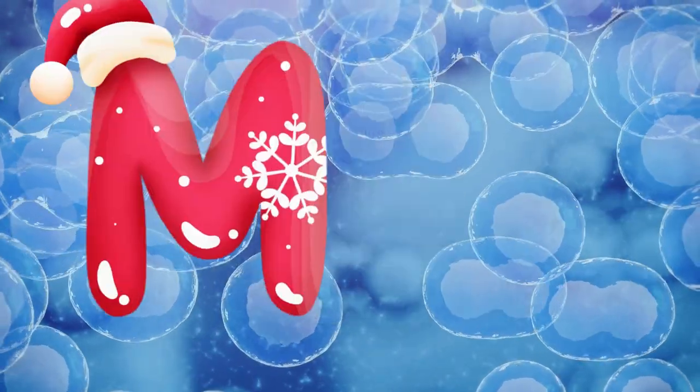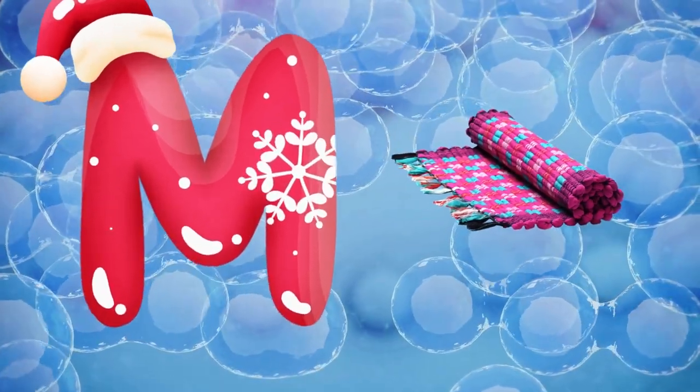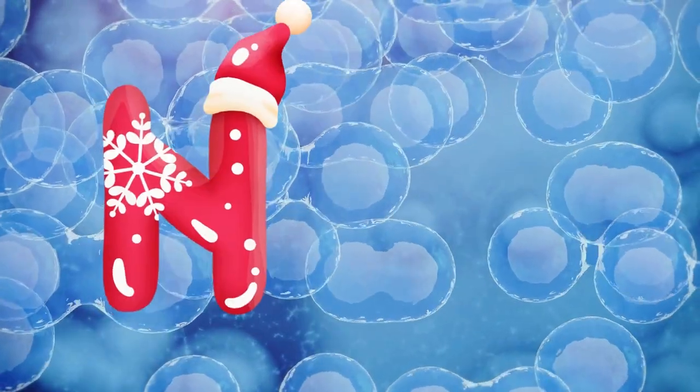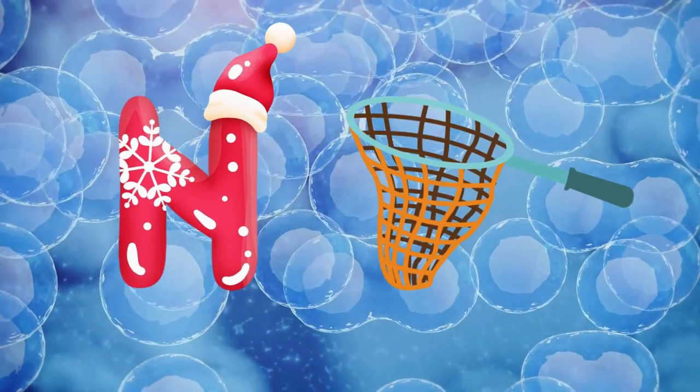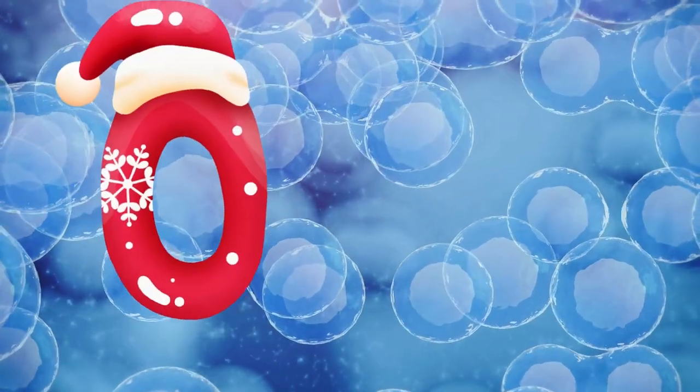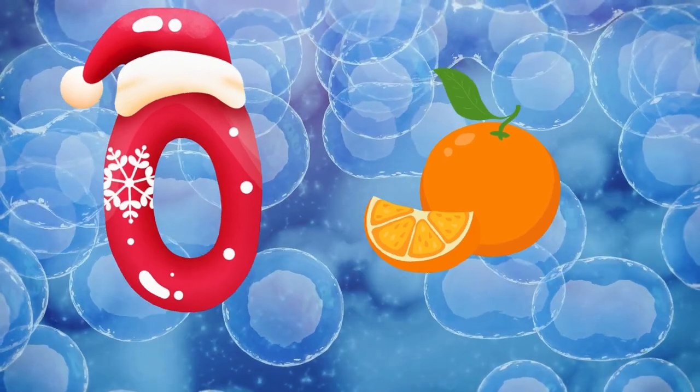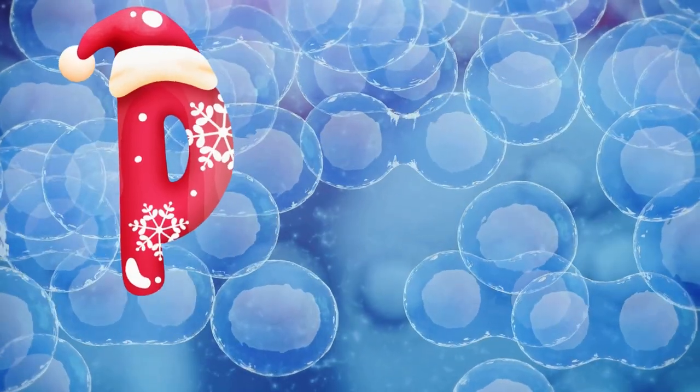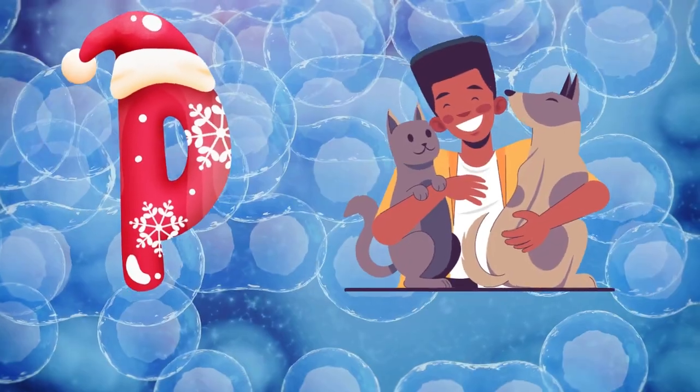M is for mat, m-m-mat. N is for net, n-n-net. O is for orange, o-o-orange. P is for pet, p-p-pet.